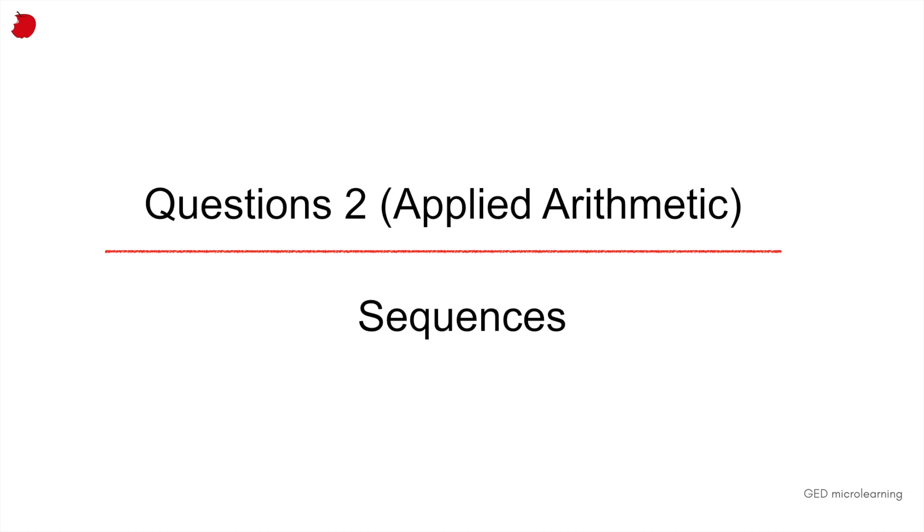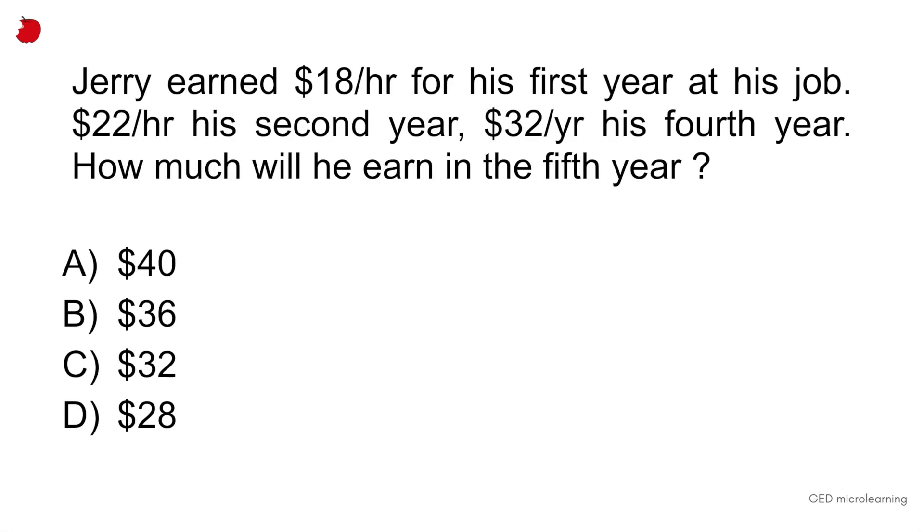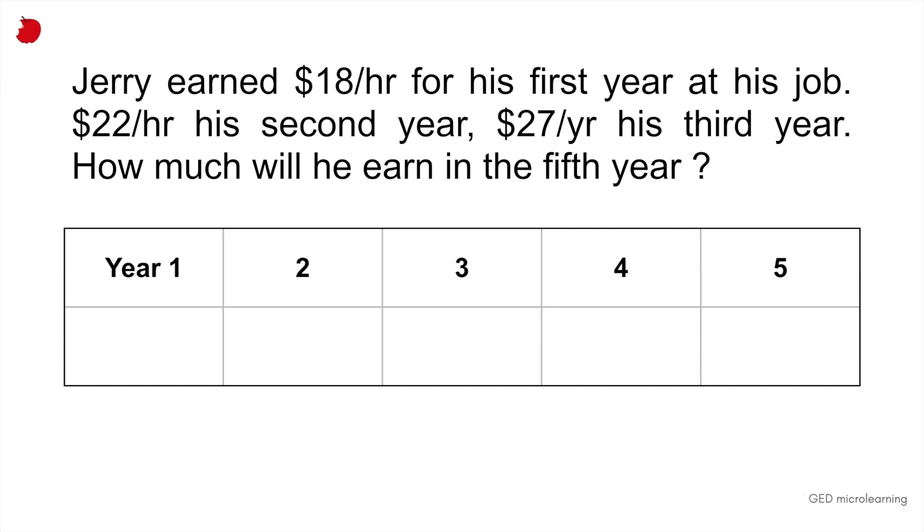Question two is an applied arithmetic problem that looks at sequences. It says Jerry earned $18 for his first year at his job, $22 his second year, $32 per hour, not per year, his fourth year. How much will he earn in the fifth year? And they're giving you several options. So the first thing is just keep it simple. Write yourself a little table like this and just introduce all the information that they're giving you in the question. Because this is the typical question where it's really easy to read stuff incorrectly and then mess it up.